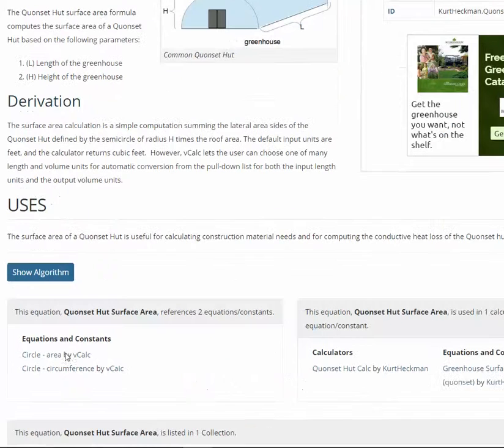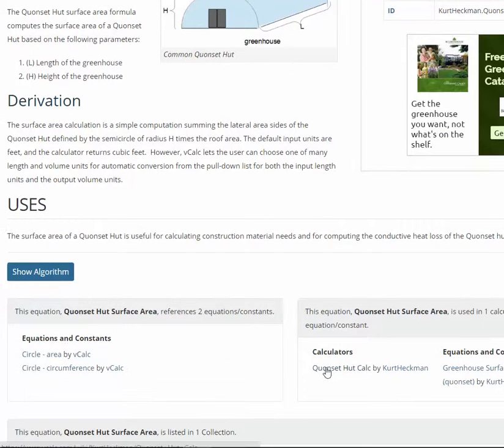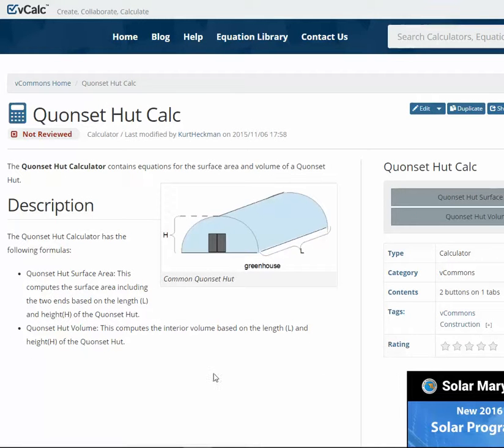Note that there are also entire calculators dedicated to the different components of a Quonset hut in vCalc. If you go to the bottom and click on this, it gives you other formulas such as surface area and volume.